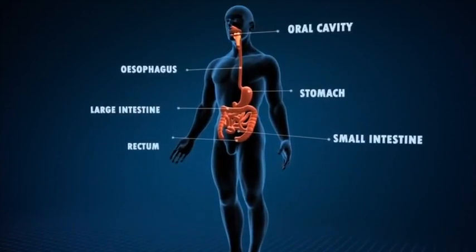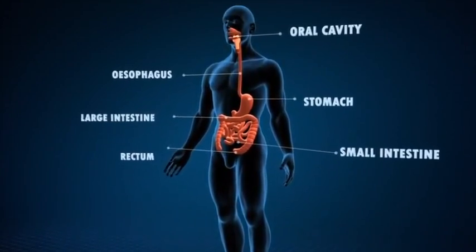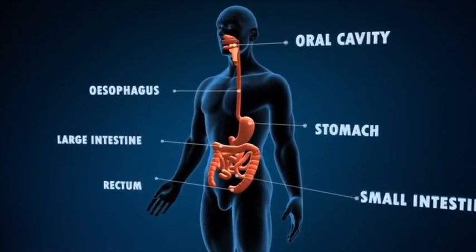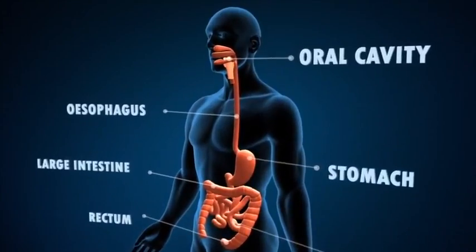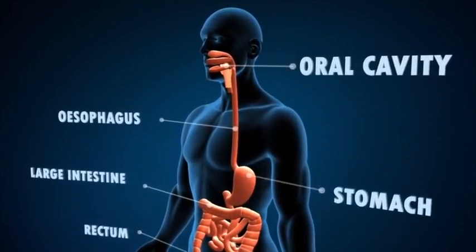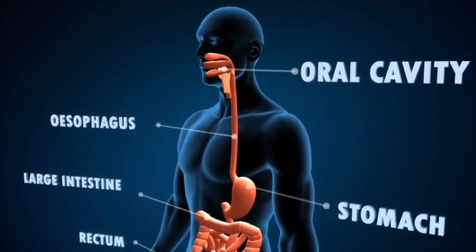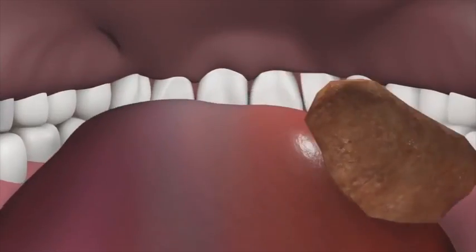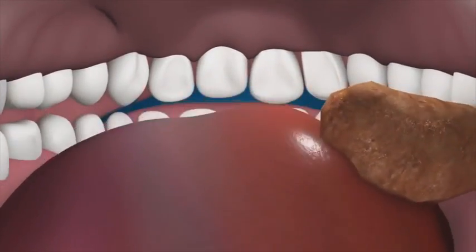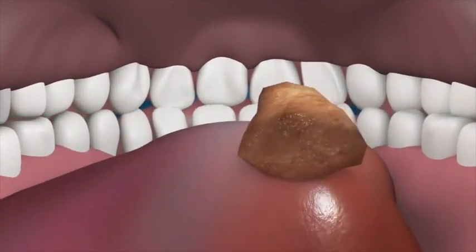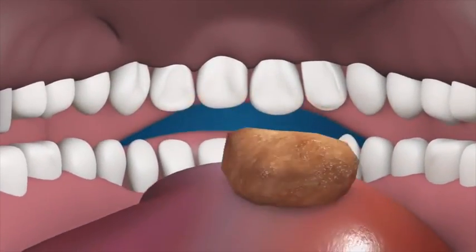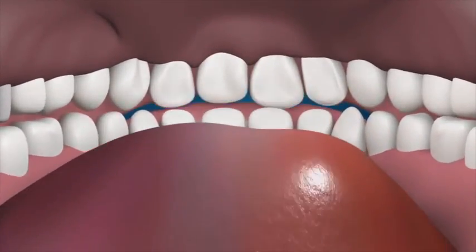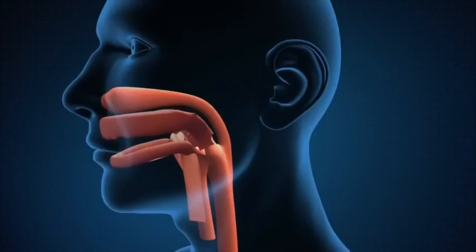We derive energy from all the food we consume. This energy is obtained from our digestive system by the process of digestion. The process of digestion begins when we put food in our mouth — teeth are used to cut and break food, and saliva helps to soften the food and contains enzymes that aid digestion.